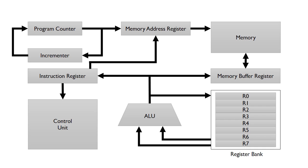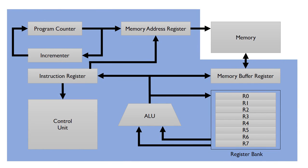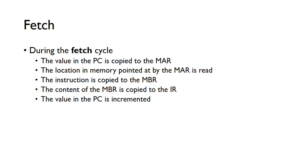Going back to the architecture of the simple computer, we've got all the parts here inside the CPU, and then we've got our separate memory. During the fetch cycle, the value in the program counter is copied to the memory address register. The location in memory pointed at by the memory address is read — the value in the program counter is essentially the address in memory where the instruction is stored. The instruction in memory is then copied to the memory buffer register, and then that's copied to the instruction register. The value in the program counter is then incremented ready for the next time.